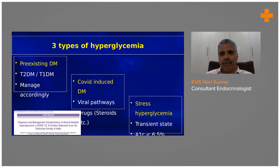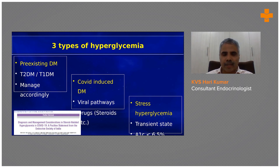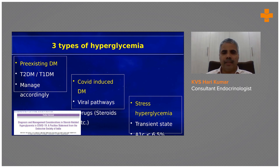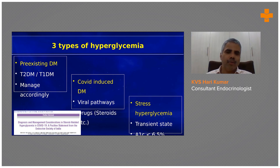The second type is what is known as COVID-induced diabetes. COVID-induced diabetes is what we discussed partially — it occurs because viral pathways affect the beta cells, or the drugs used in COVID treatment can all contribute.